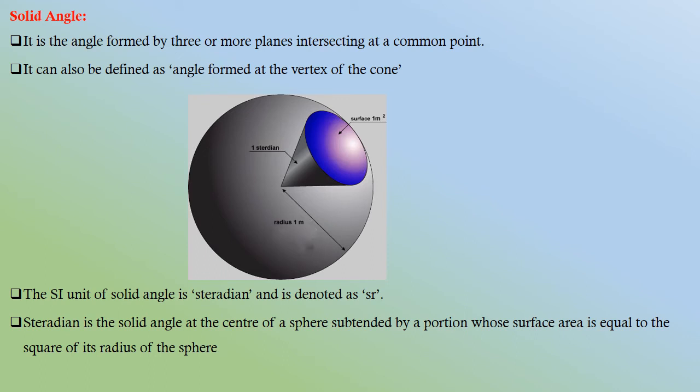Solid angle: It is an angle formed by three or more planes intersecting at a common point. It can also be defined as an angle formed at the vertex of a cone. The SI unit of solid angle is steradian and is denoted as sr. Steradian is a solid angle at the center of a sphere subtended by a portion whose surface area is equal to square of its radius of the sphere.